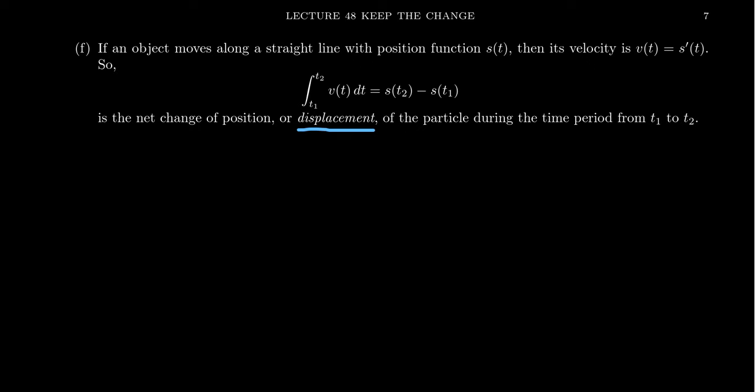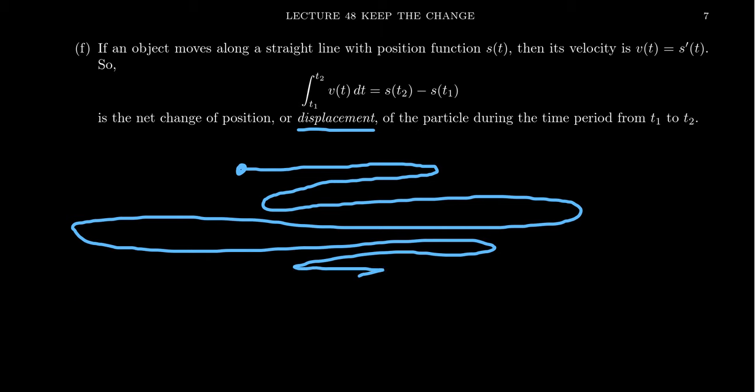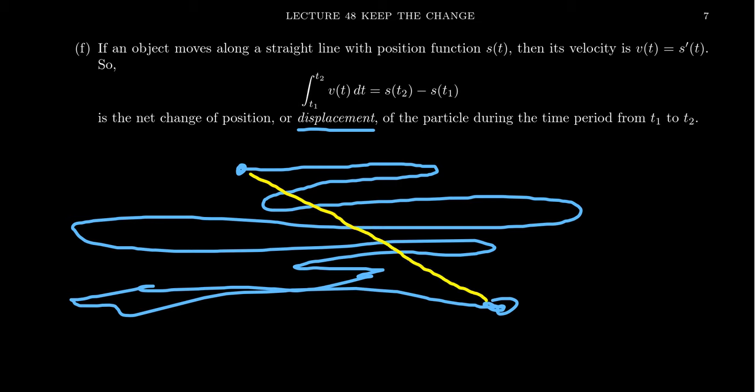If you integrate velocity, you will get the net change of position, which is what we call displacement. Displacement represents the net change of position. So if you have a particle that starts right here, goes to the right, then to the left, then to the right, then to the left, then to the right, it plays sort of like a game like this. Displacement doesn't care about the journey. Displacement is just, what is the distance between where you started and where you stopped? It's only looking at the net change of position. And if you integrate the velocity function, it gives you the displacement. We can use FTC to help us calculate this displacement.